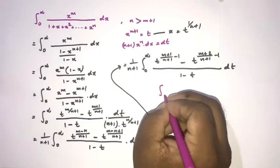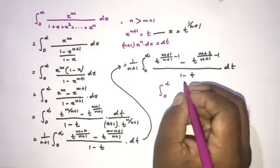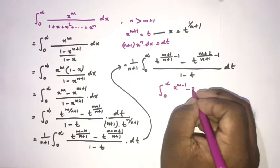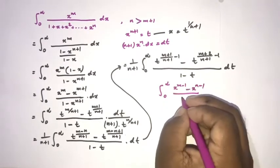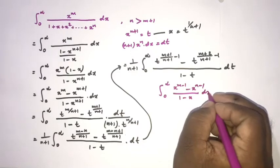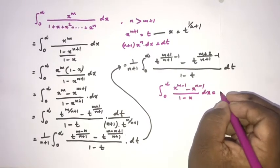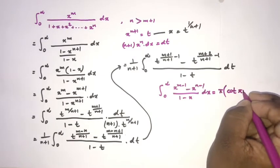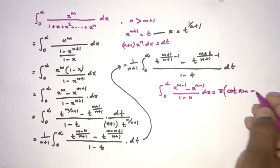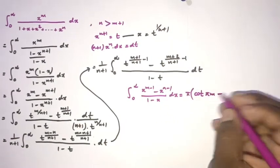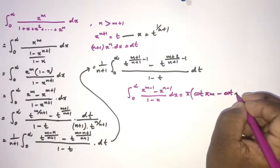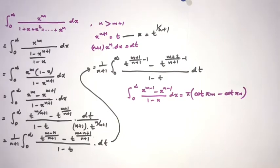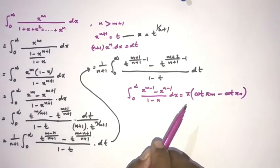In a previous video we evaluated the integral from 0 to infinity of (x to the m minus 1 minus x to the n minus 1) over (1 minus x) dx, which equals pi times cot(pi·m) minus cot(pi·n). I will add the link in the description and also make a card.